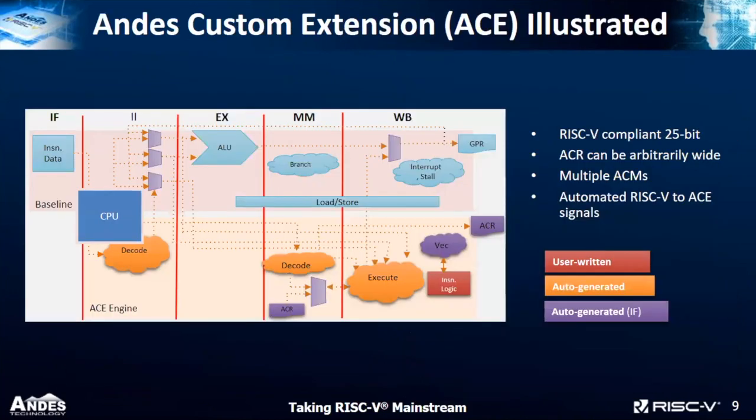This is a high-level view of a CPU pipeline and how it interacts with the ACE pipeline. We are creating a semi-independent pipeline to accelerate the algorithm you care about. ACE does the heavy lifting of managing all pipeline interactions and hazards — shown in orange and purple — so you only need to worry about your user logic, shown in red.